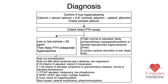You can use an equation to correct for albumin — there are many equations available, but this one is commonly used. If the calcium is still high after correction, you can check an ionized calcium. After that, you can order a PTH assay to differentiate PTH-dependent from PTH-independent hypercalcemia.